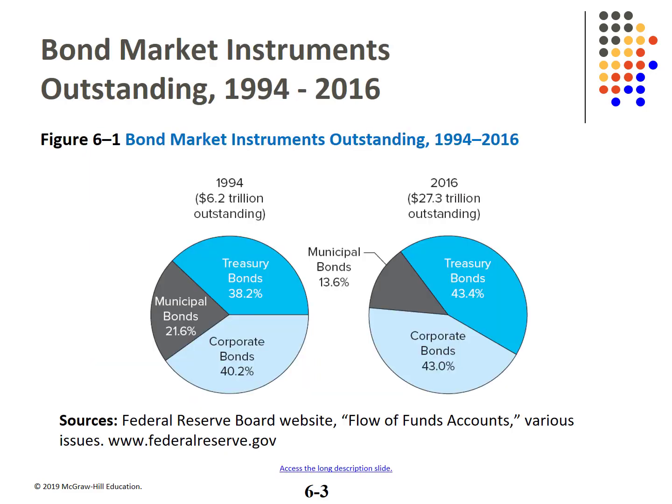These two pie charts show the basic breakdown in the bond market between the two basic types of bonds. Treasuries were and still are a large part of the market, gaining in share since 1994. Corporate bonds are still around 40% of the market, while municipal bonds have declined in market share.